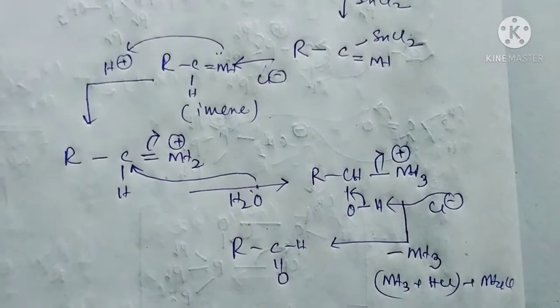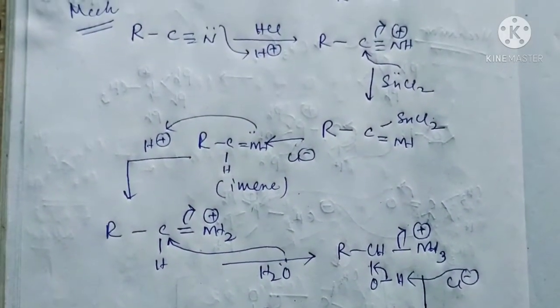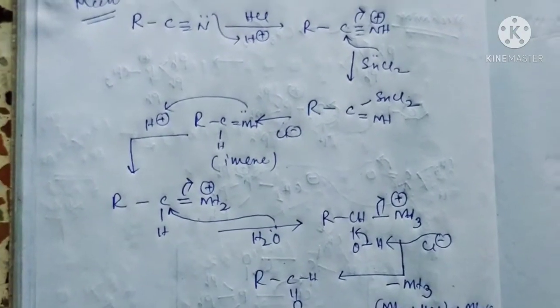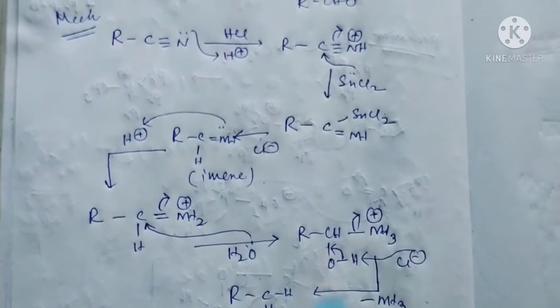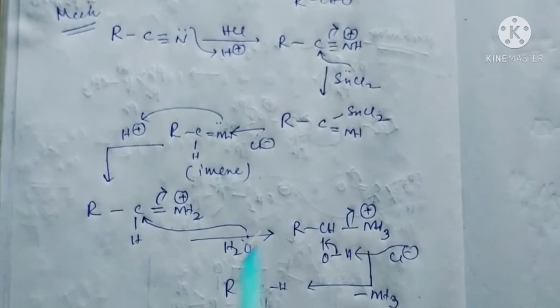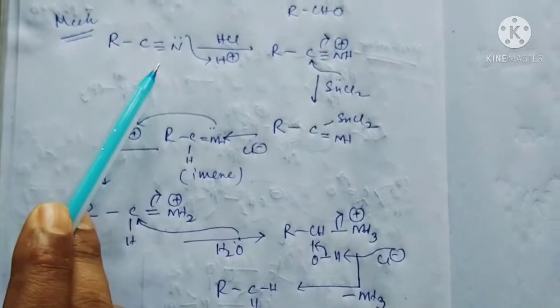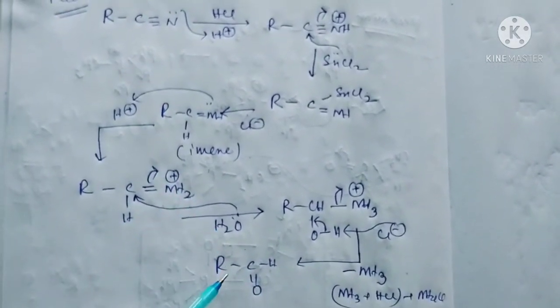So this is basically the mechanism. This is actually the mechanism of Stephen's reaction. Students, this is how from alkyl cyanide we can produce aldehydes.